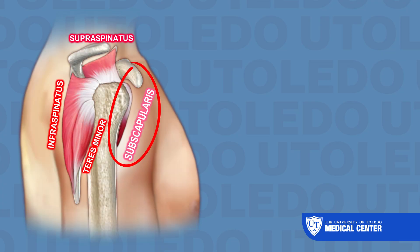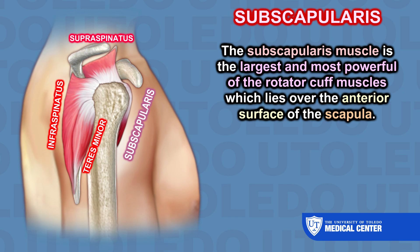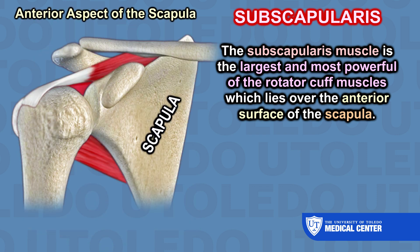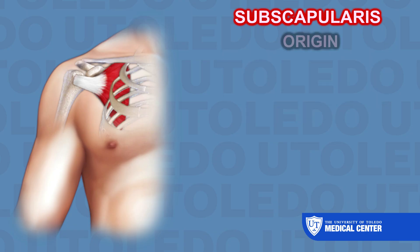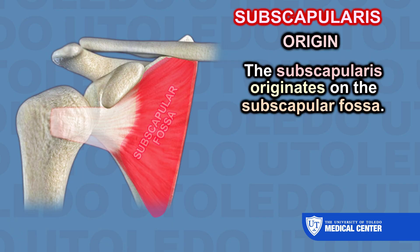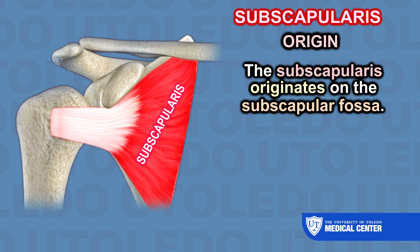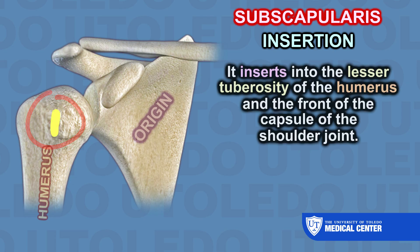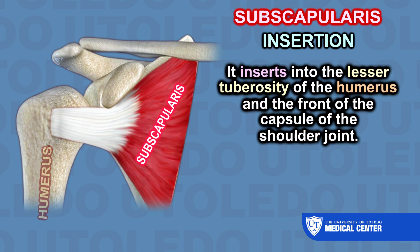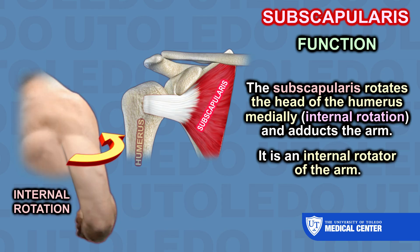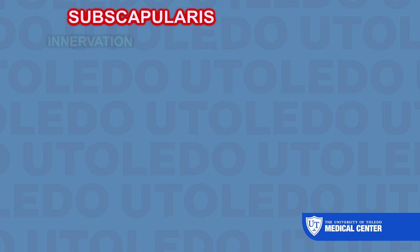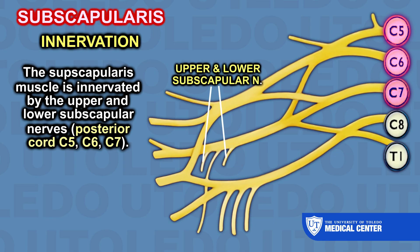The fourth rotator cuff muscle is the subscapularis. It is the largest and most powerful of the rotator cuff muscles, lying over the anterior surface of the scapula. It originates on the subscapular fossa of the scapula, and its insertion is into the lesser tuberosity of the humerus and the front of the capsule of the shoulder joint. The subscapularis rotates the head of the humerus medially and adducts the arm — it is an internal rotator. Innervation comes from the upper and lower subscapular nerves, posterior cord C5, C6, and C7.